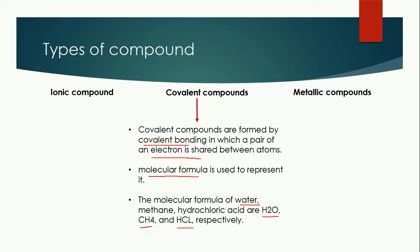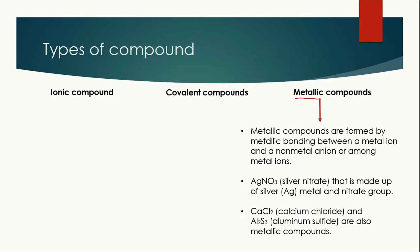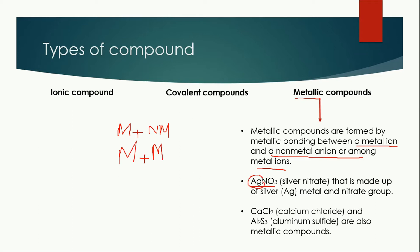The last type is metallic compounds, formed by metallic bonding between a metal ion and a non-metal ion, or among metal ions. Two conditions apply: a metal combining with a non-metal, or a metal combining with another metal. For example, silver nitrate — silver is a metal while the nitrate group is not — making it a metallic compound. Similarly, calcium chloride and aluminium sulfide are also metallic compounds.